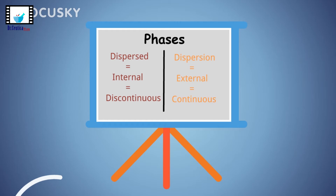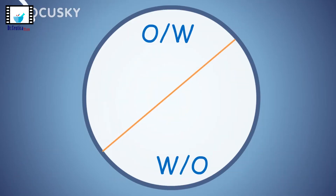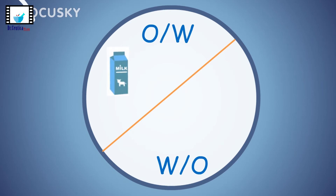Basically, we have two types of emulsions: oil-in-water and water-in-oil. Depending on whether the oil or the water is the external phase, the emulsion is categorised. In oil-in-water emulsions, the oil droplets are dispersed throughout the aqueous phase. Examples of such emulsions include milk, yogurt, and ice cream.